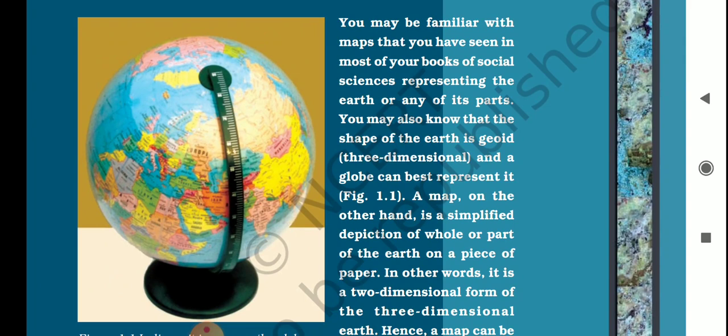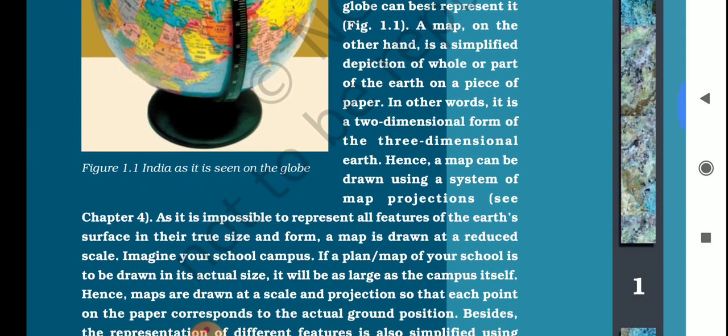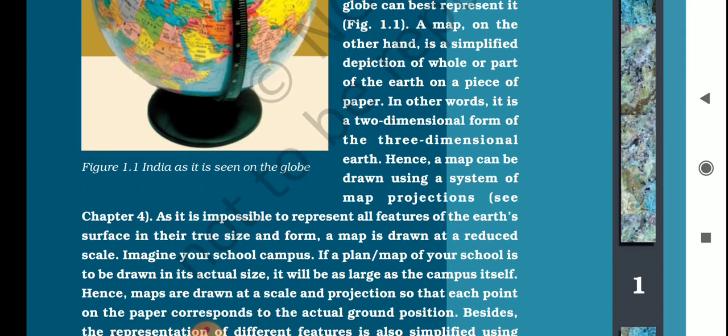You also know about the shapes of the earth. A map is a simplified depiction of the whole or part of the earth on a piece of paper. In other words, it is a two-dimensional form of the three-dimensional earth, and the map can be drawn using a system of map projections.